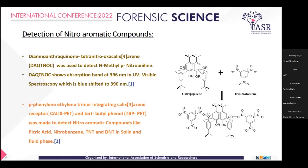Next, we will discuss the detection of nitroaromatic compounds with calixarene. First, diamino-anthracene trans-nitro-oxacalix[4]arene was used to detect N-methyl-para-nitroaniline, using UV-visible spectroscopy. Calixarene shows an absorbance peak at 396 nanometers which gets blue-shifted to 390 nanometers in the presence of N-methyl-para-nitroaniline. After that, a receptor made up of para-phenylene ethylene trimer integrated with calix[4]arene and tertiary butylphenol was used to detect different aromatic compounds like picric acid, nitrobenzene, trinitrotoluene, and dinitrotoluene from solid and fluid phases. Here is a structure of calix[4]arene and trinitrotoluene which gets attached to the calix, and this way the complex is formed.